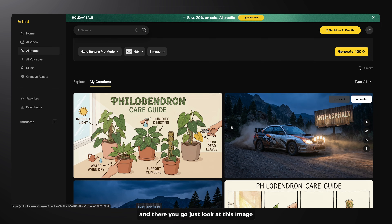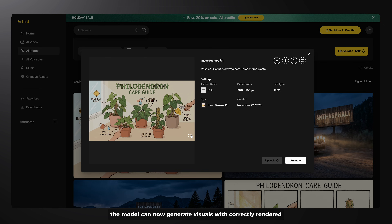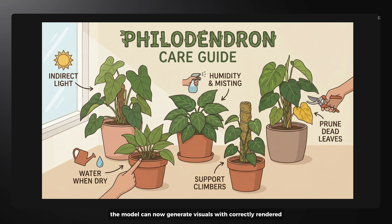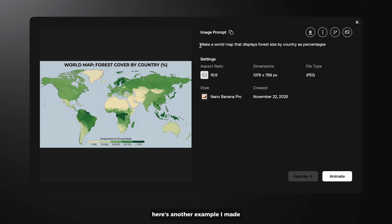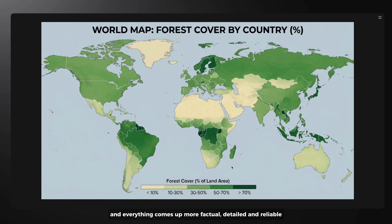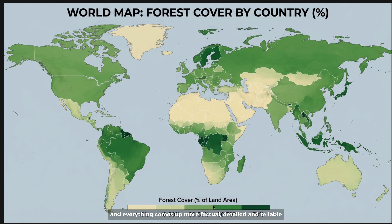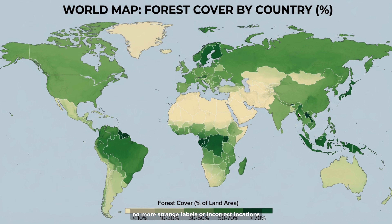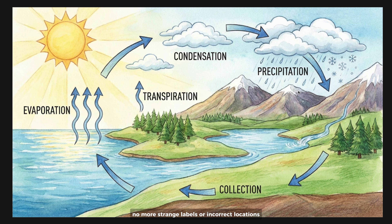Just look at this image. The model can now generate visuals with correctly rendered, readable text directly inside the image. Here's another example I made — you can create accurate maps and diagrams, and everything comes up more factual, detailed, and reliable. No more strange labels or incorrect locations. It actually gets things right.